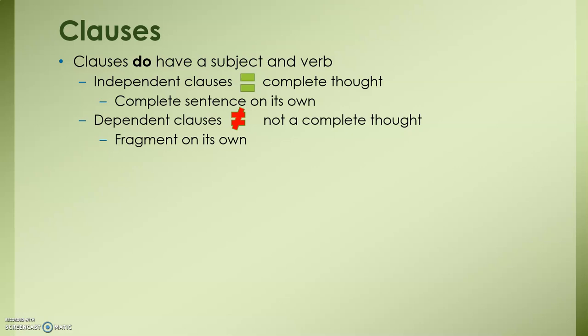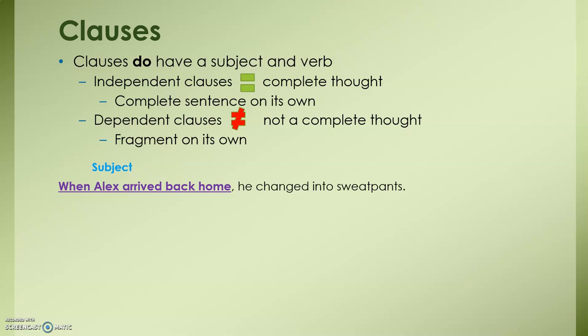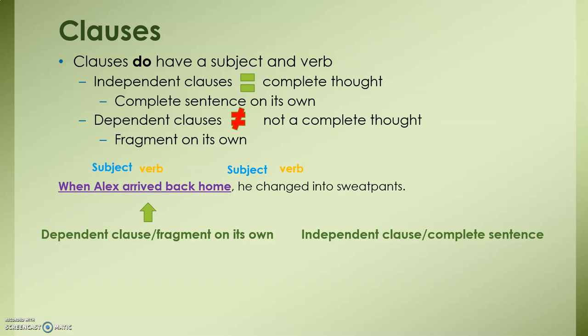Let's look at a sentence that combines a dependent and an independent clause: 'When Alex arrived back home, [comma] he changed into sweatpants.' On the left-hand side, unlike our phrases, we have a subject, Alex, and a verb, arrived. On the right-hand side, we have a subject, he, and a verb, changed. However, on the left, the word 'when' makes that a dependent clause, because 'when Alex arrived back home' could not stand on its own — it wouldn't make sense without more context. On the right-hand side, you do have an independent clause — a complete sentence — which is why we can split the two with just a comma.